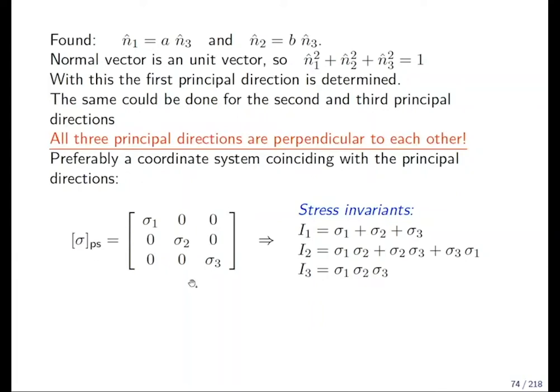Almost finished with defining these things. I mentioned the word stress invariance before. Now, the I1 is not much simpler. It's just the sum of the diagonals. The I2 is now the sum of three products of two respective: sigma 1 with sigma 2, sigma 2 with sigma 3, and sigma 3 with sigma 1. And I3 is actually a very simple calculation. It's only multiplying sigma 1 with sigma 2 with sigma 3.